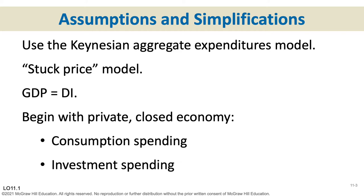We're laying the groundwork here for chapters 13 through 16 to see what the government could do and how it could affect change in the economy. When we use the aggregate expenditures model, it's a fixed price model — prices are stuck wherever they are at the moment; we're not letting prices change as we develop this model. When we get to chapter 12, we'll take the same learning but let prices change. We're still assuming that GDP equals disposable income, which is an abstraction but approximates reality and helps our learning.